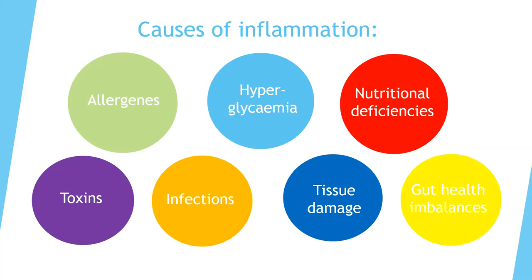Gut health imbalances matter too — if you have SIBO, dysbiosis, any bad overgrowth of bacteria, or not enough stomach acid, it sets off a chain reaction. If you have leaky gut, eat food you're intolerant to, or take a lot of pain medications and certain other medications, that damages the intestinal and stomach lining. Particles then get from the stomach into the bloodstream, creating inflammation in the blood vessels. So there are all kinds of reasons why you can get inflammation.